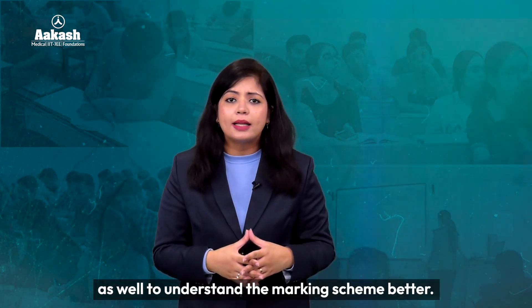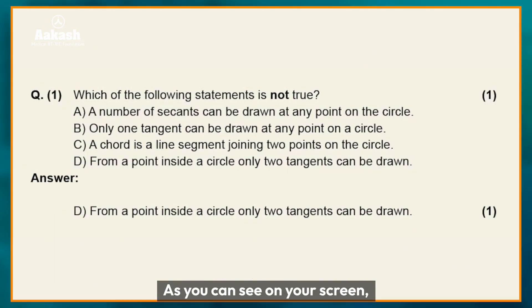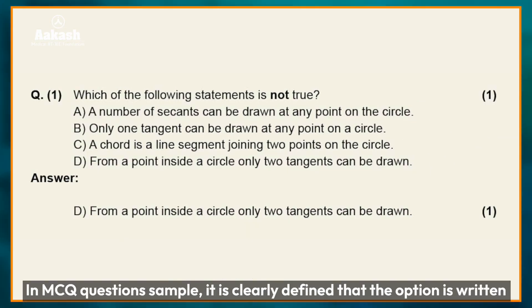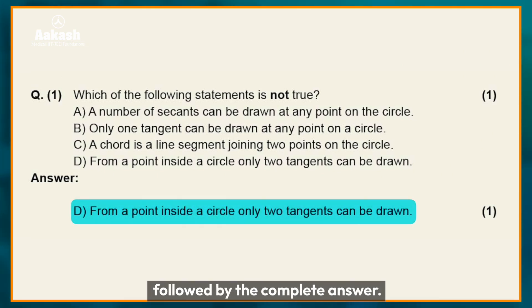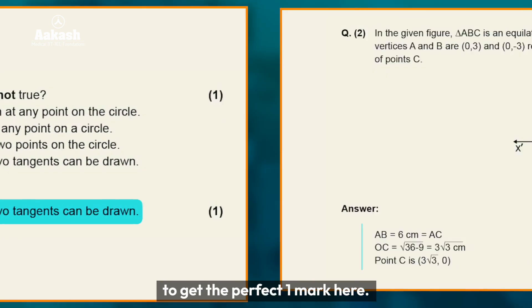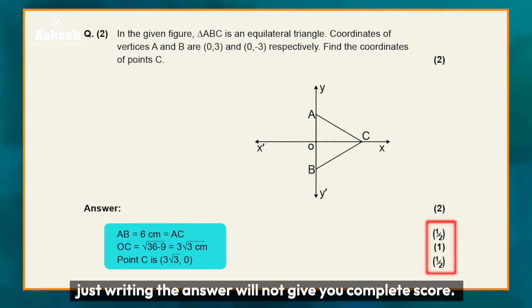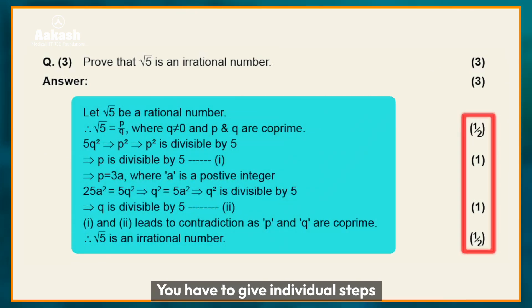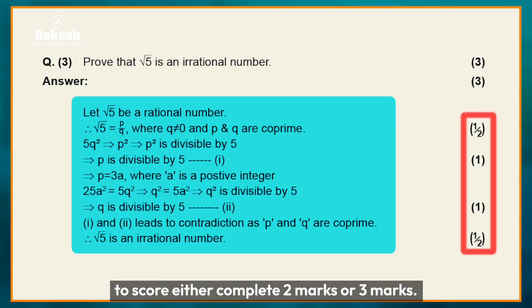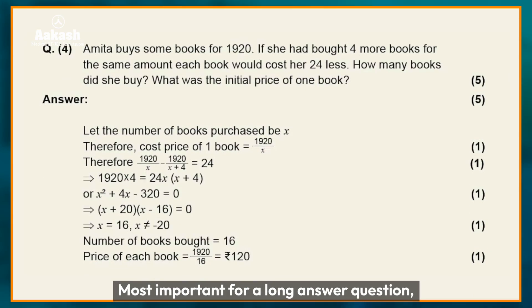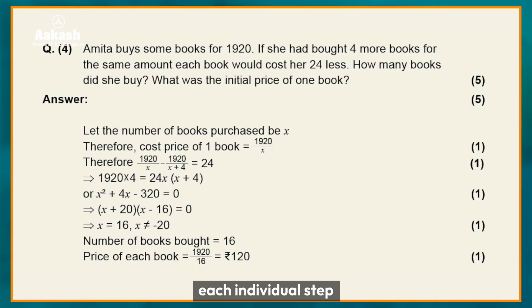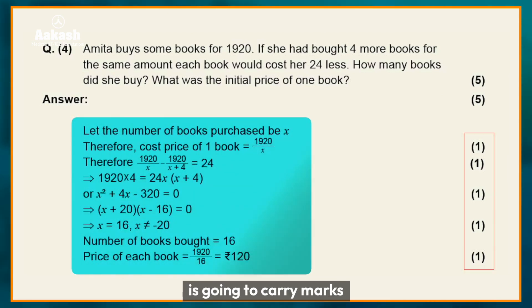So let's look at some sample questions of maths as well to understand the marking scheme better. As you can see on your screen, the MCQ sample clearly shows that the option is written followed by the complete answer. So make sure you do that to get the perfect one mark. For a two mark question, just writing the answer will not give you the complete score. You have to give individual steps to score either complete two marks or three marks. Most importantly, for a long answer question, each individual step is going to carry marks.